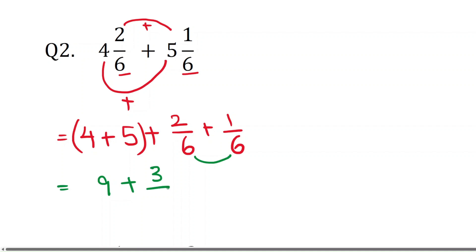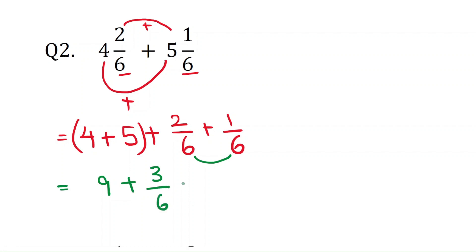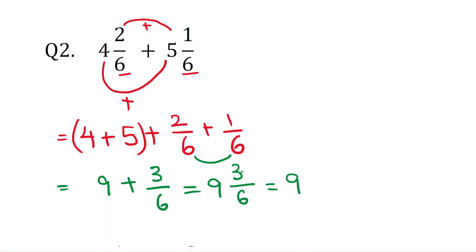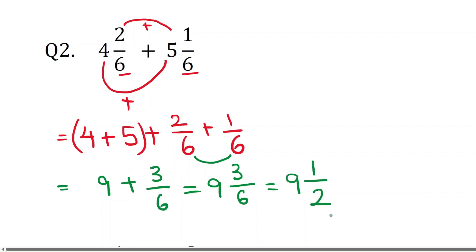So we have 9 and 3/6. If you simplify, the numerator and denominator are both divisible by 3, so 3/6 simplifies to 1/2. The answer is 9 and 1/2.